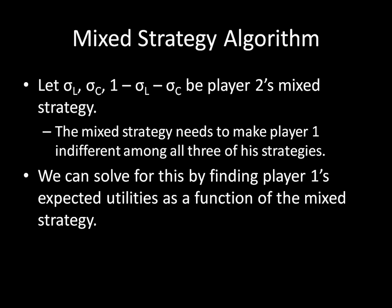The mixed strategy that player two is doing here needs to make player one indifferent among all three of his strategies. That's because player one is also going to mix in equilibrium, and for him to be willing to mix, every single pure strategy in the support of his mixed strategy must yield the same expected utility. So that's why we're going to be solving for player one's indifference — finding the mixed strategy of player two that makes player one indifferent among all three of his strategies.